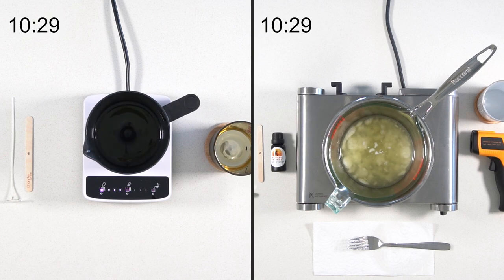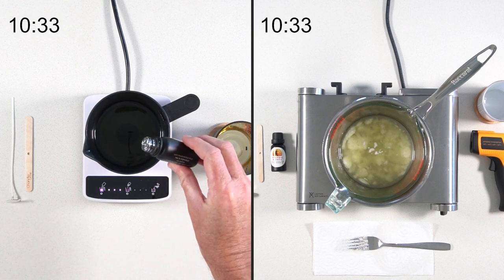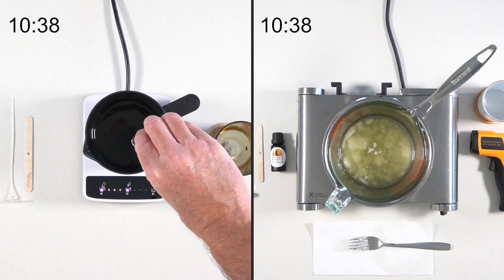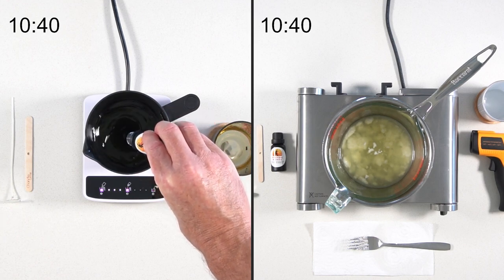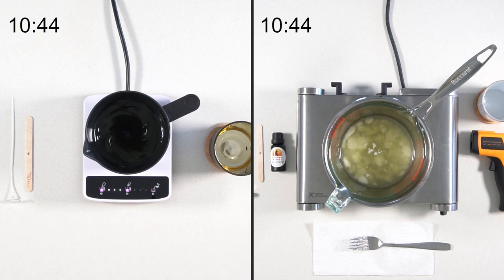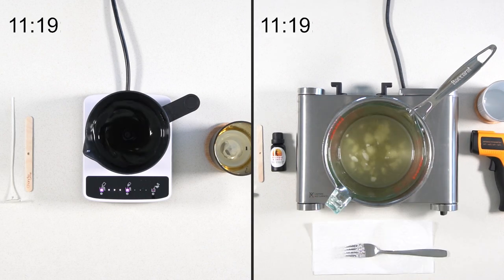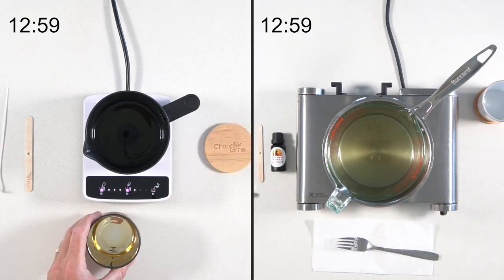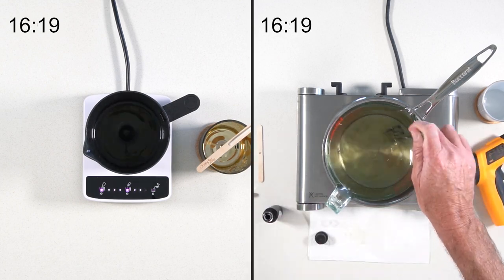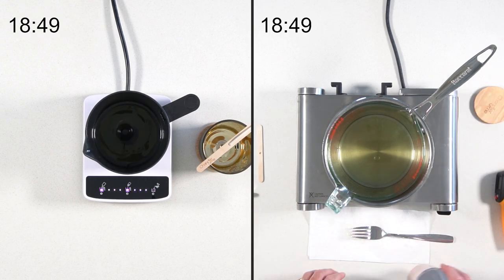You can see on the double boiler method we're still waiting for the wax to melt. In fact, you can see a lot of flakes still in there. Whereas we're about to pour the fragrance in now into the candle maker, and then we'll press that middle flashing button which will put us into a stirring mode. That's going to automatically stir the wax for you for two minutes, really binding the fragrance molecules into the wax.